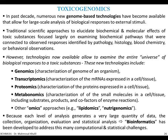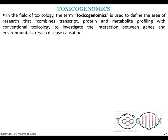Bioinformatics has been developed to address this computational and statistical challenge — to merge all these data to have a clear picture of what is going on. In the field of toxicology, toxicogenomics is used to define the area of research that combines transcript, protein, and metabolite profiling with conventional toxicology techniques to investigate the interaction between genes and environmental stress in disease causation.